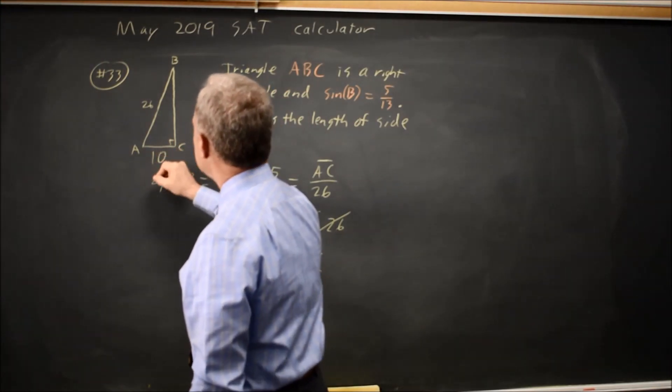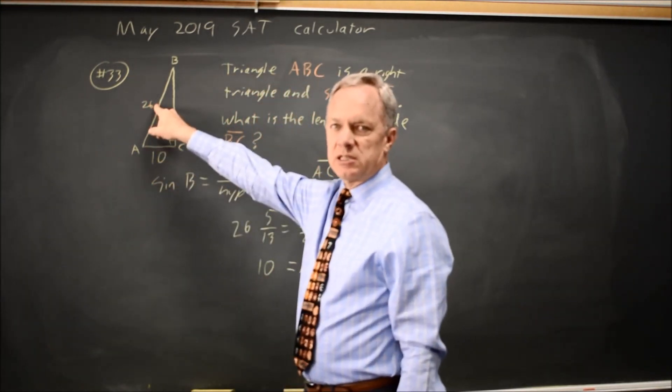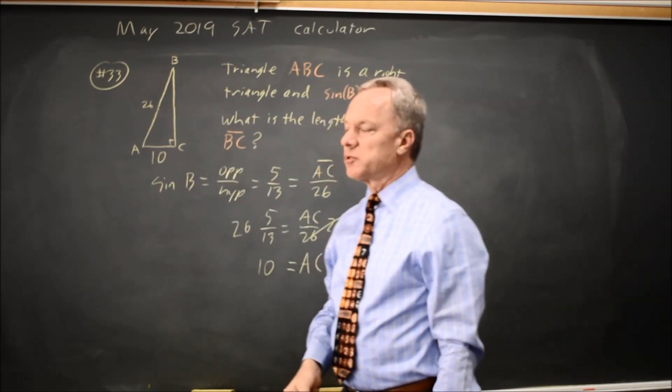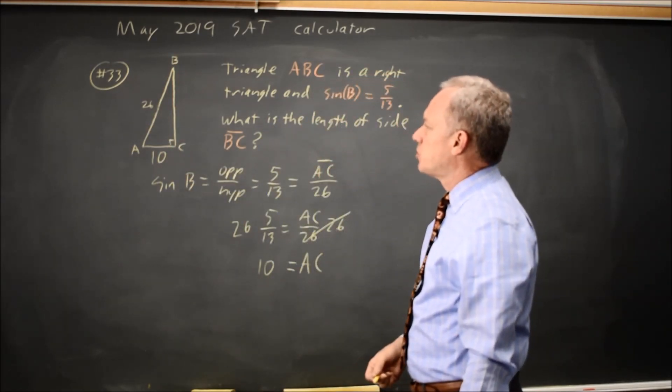So AC equals 10, and I see that 10 over 26 is 5 over 13, so the sine of B is opposite over hypotenuse equals 5 over 13, as it's supposed to be.